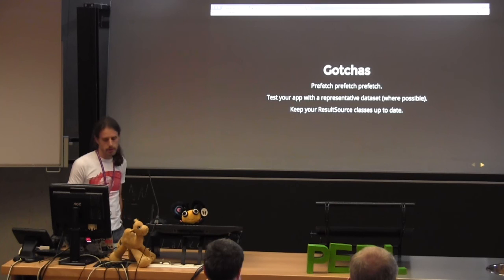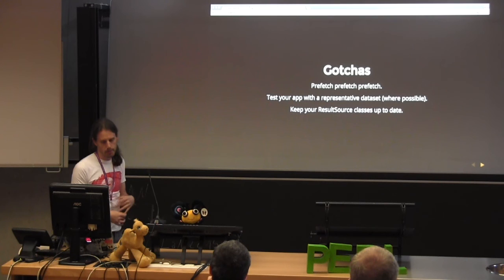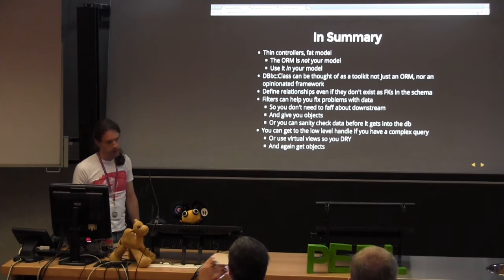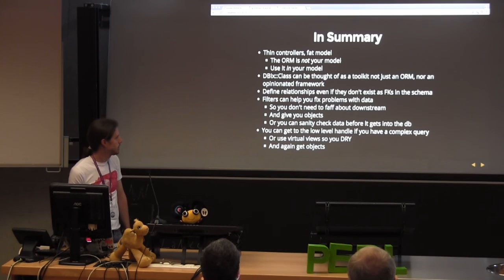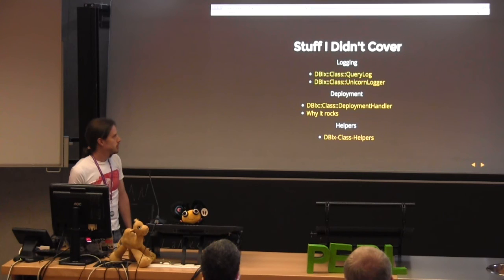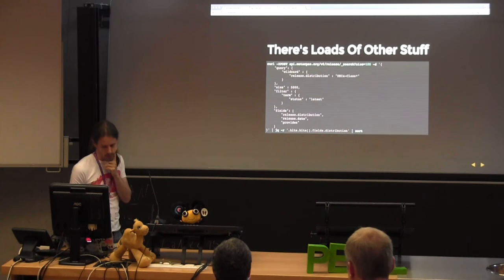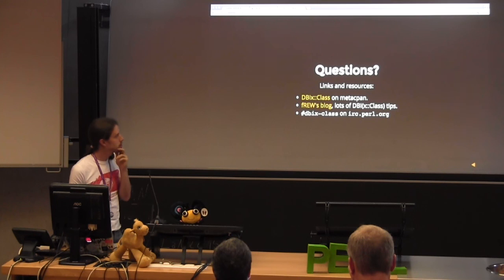Use that little script to keep your result source classes up to date. You can just regenerate them whenever you update your database — that would probably be part of your deployment pipeline. If you update the database, you need to update the result source classes, because DBIx::Class will happily run against a different version of the schema until you ask for something it doesn't know about, and then it will explode. That's just a quick summary — there's a lot of stuff I didn't cover, but there are about 100 or so distributions related to DBIx::Class on CPAN, and lots more information on IRC in the #dbix-class channel. The manual on CPAN is quite comprehensive.